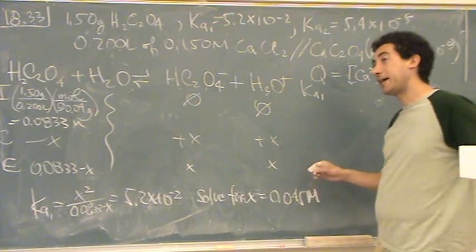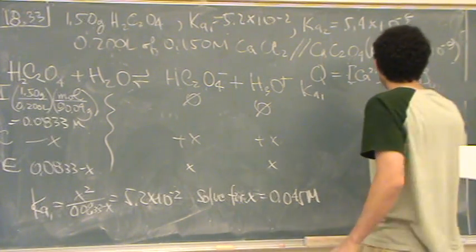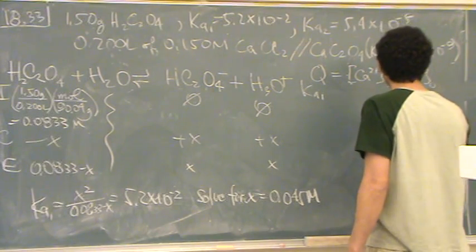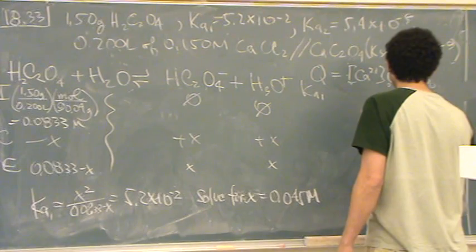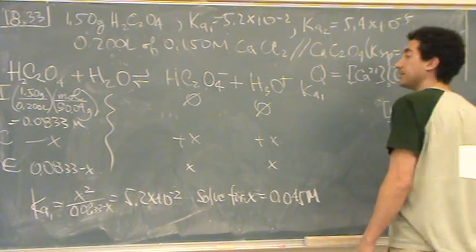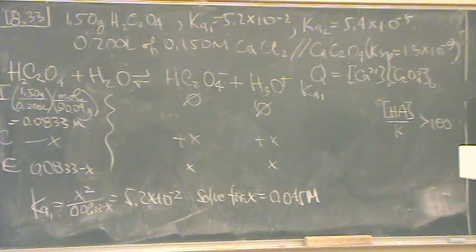If you want to do it more mathematically, then you would say the concentration of the acid divided by k has to be greater than 100. If you want to be more mathematical about it.